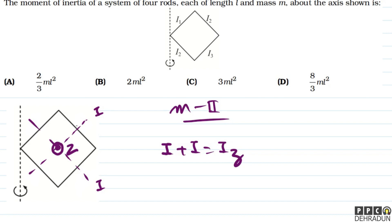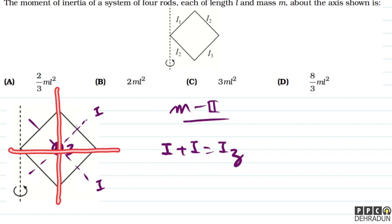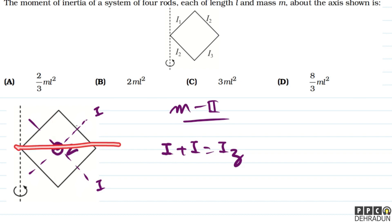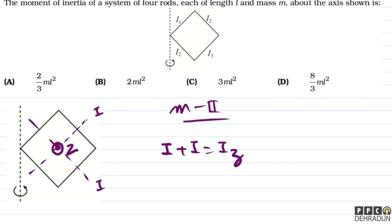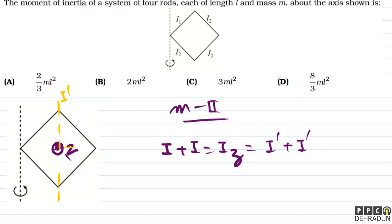यह जो दो axes हैं, इन दोनों के about moment of inertia बिल्कुल same आएगा। साथ ही ये दोनों axes आपस में 90 degree का angle बना रही हैं। इसलिए इस axis को I' कहें, तो I' = Iz/2।